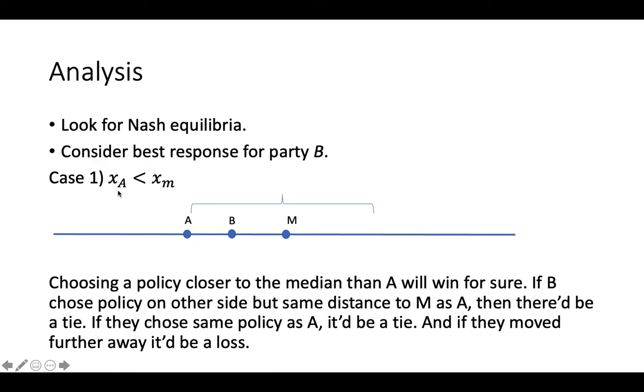So their best response, given that they're assuming A is playing some point below that, they're going to look at the distance, and they're going to choose a point that is within that distance on either side of M. That's going to be their best response. So here, just for this specific case, this whole interval would be a best response, and it would be an open interval.